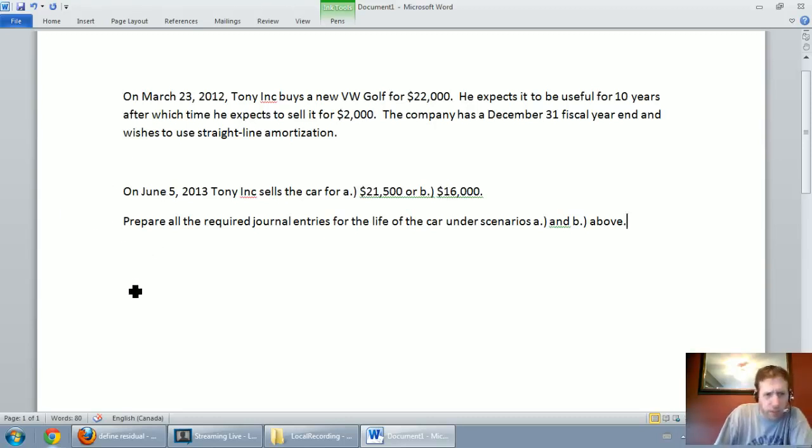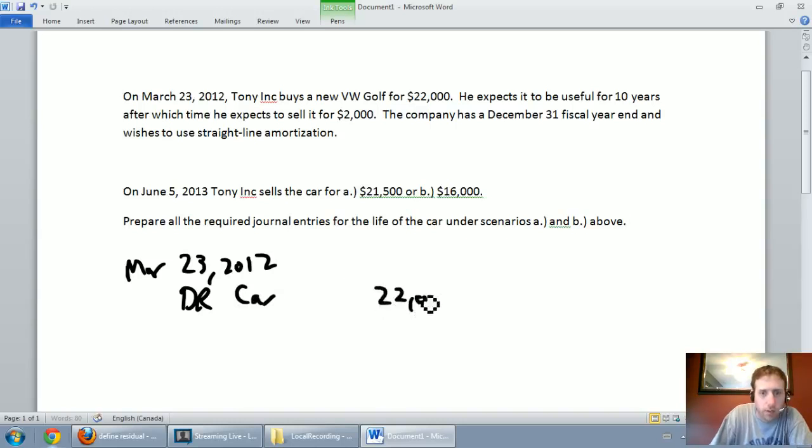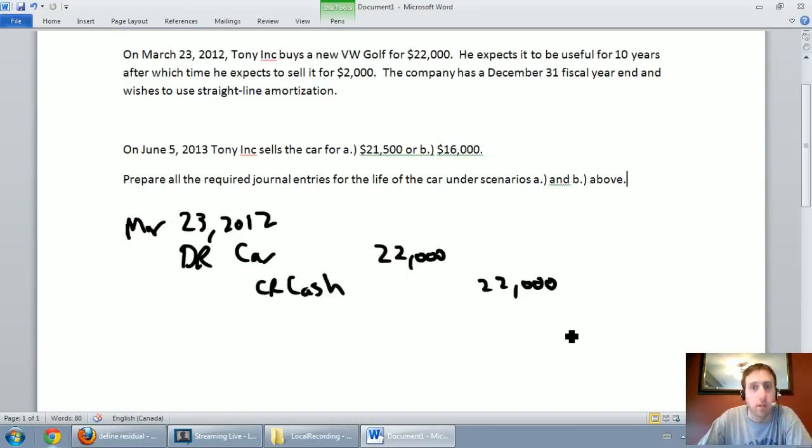So the first thing we've got to do is buy the car. The day of course is March 23rd, 2012 and we buy a car, let's assume for cash. That's how I'm going to buy my car, I'm not a big financing guy. So I'm going to say, hey I've got a car, a debit car, $22,000 and we're going to credit cash, $22,000. So we've got our car, marvelous.